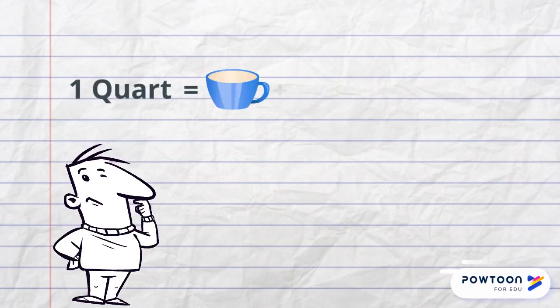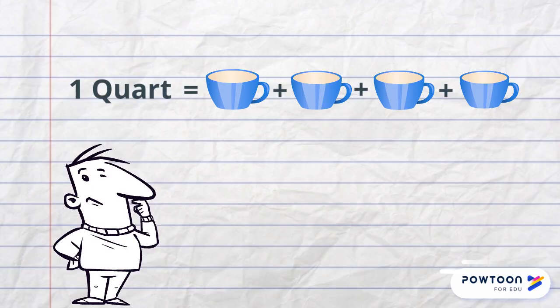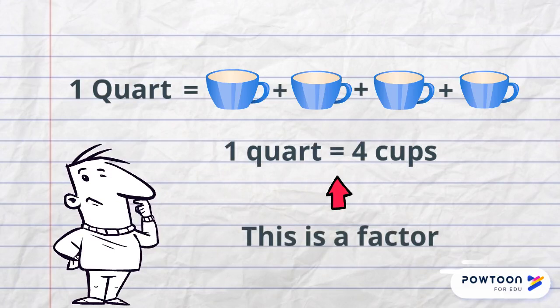If this is so, can you say that one quart is equivalent to four cups? The answer is yes. Two amounts in different units that are equal to each other is called a factor.